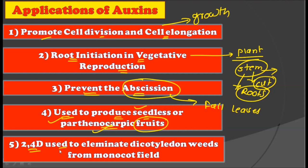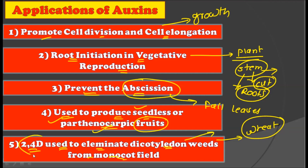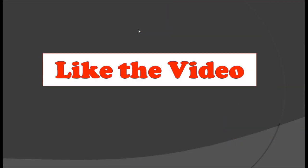2,4-D is used to eliminate dicotyledonous weeds from monocot fields. For example, in a wheat field all the crops are monocots, but there are certain weeds that need to be eliminated. 2,4-D is highly target-specific — it only kills the dicotyledonous weeds and does not affect the monocot plants. Due to this target specificity, the monocot field remains untouched, making auxins highly valuable in agriculture.